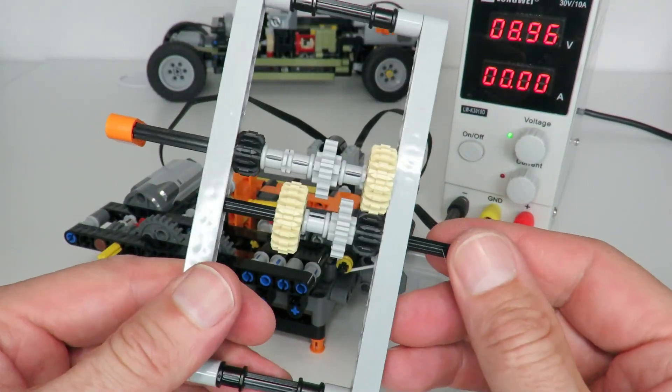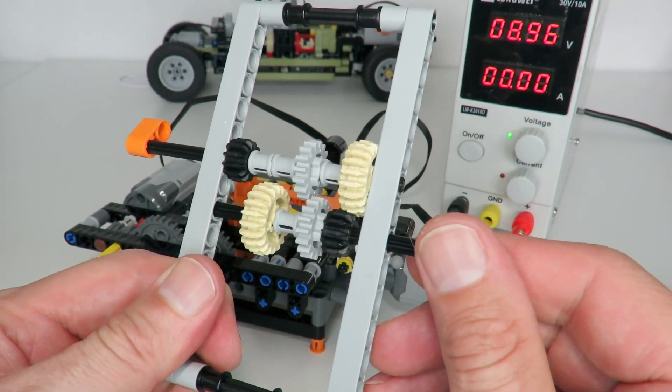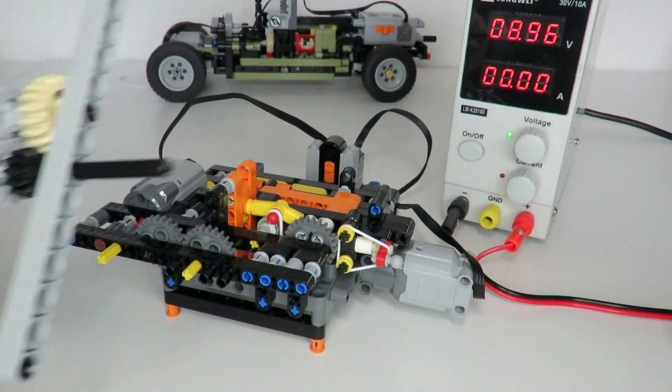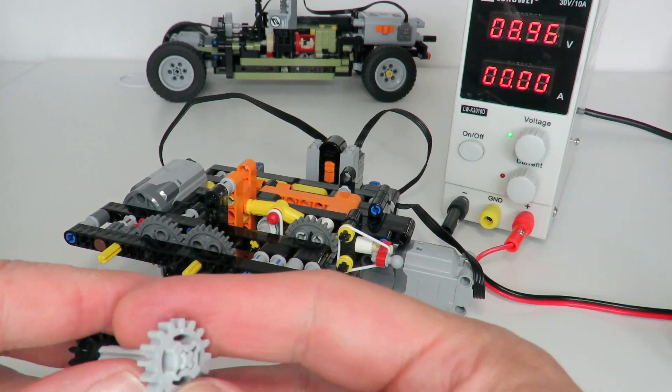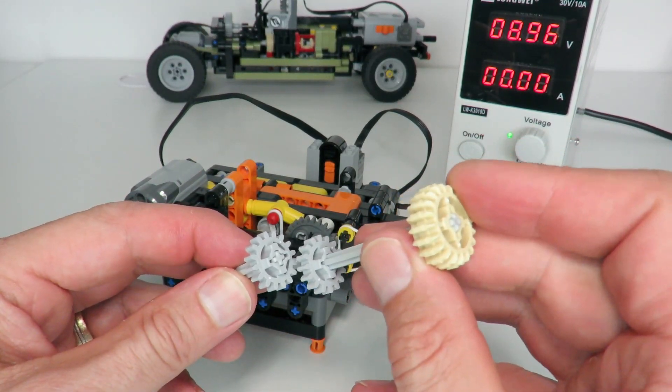Now although this is a great solution it does have one major issue and that's the meshing of those central flat gears. Because of the structure of those gears unless the teeth align exactly it can be quite hard to get them to engage. And that's simply due to the structure of those gears. The flat gears do need an exact alignment in order to mesh.